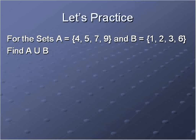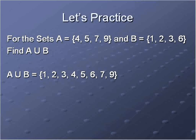Let's practice. For set A = {4, 5, 7, 9} and set B = {1, 2, 3, 6}, find the union of A and B. The union is all the numbers that are in either set. So in this case it would be {1, 2, 3, 4, 5, 6, 7, 9} — listed chronologically, all numbers from both sets combined. That's the union.